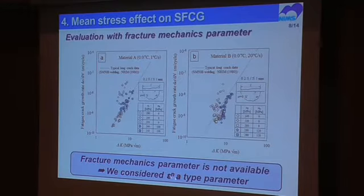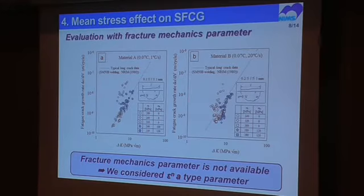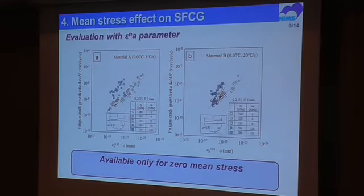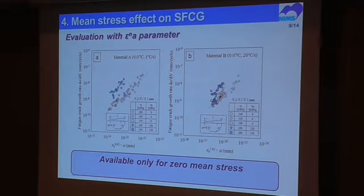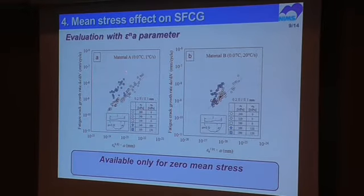So we considered another parameter — the εa-type parameter. This parameter is known as a simple parameter for evaluating small fatigue crack growth rate, and is expressed as stress amplitude, material constant, and crack length. This slide shows the evaluated result using this εa-type parameter. As you can see, all fatigue data under zero mean stress conditions are uniformly evaluated by this parameter. However, fatigue data under tensile mean stress cannot be evaluated by this parameter.